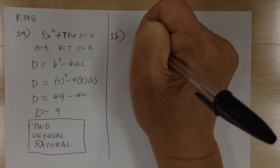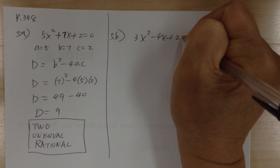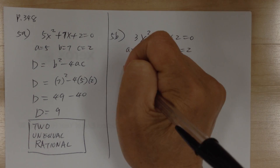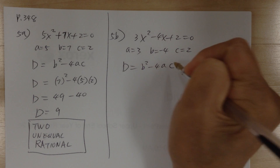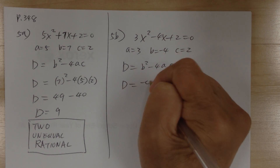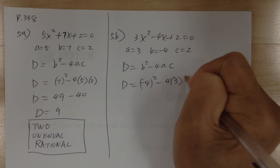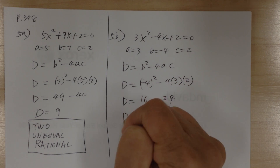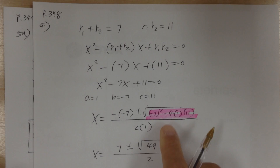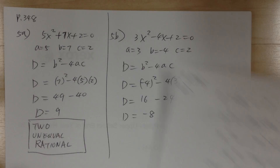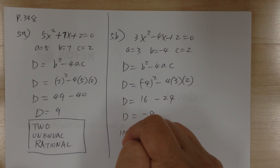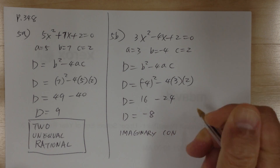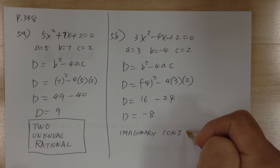For 5b, you have 3x² − 4x + 2 = 0, so a = 3, b = −4, c = 2. The discriminant d = (−4)² − 4(3)(2) = 16 − 24 = −8. Since d is negative, you're going to get imaginary numbers — specifically complex conjugate roots (one with plus, one with minus).